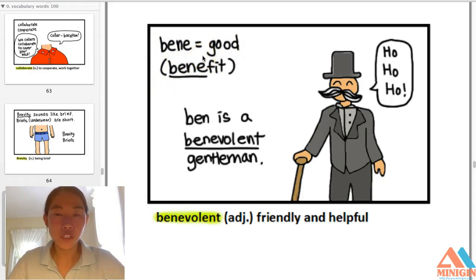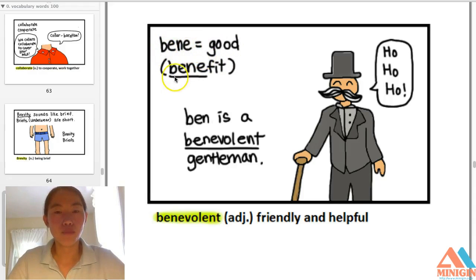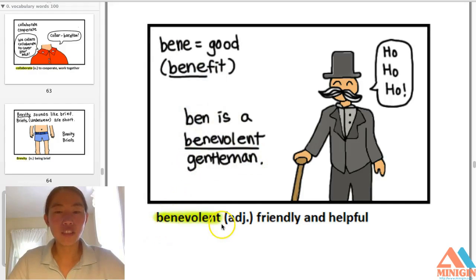Remember, a lot of English words come from Latin. 'Bene' means good — like in 'benefit.' Benevolent — adjective — friendly and helpful, kind. Ben is a benevolent gentleman. Remember that b-e-n-e means good.